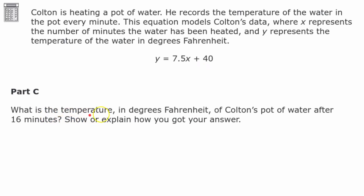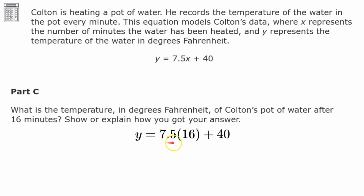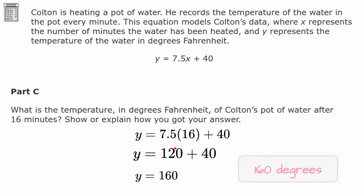Part C: What is the temperature in degrees Fahrenheit of Colton's pot of water after 16 minutes? X represents the number of minutes, so we replace X with 16. Multiplying 7.5 × 16 = 120, then adding 40 gives 160. After 16 minutes, the temperature of the pot of water will be 160 degrees Fahrenheit.